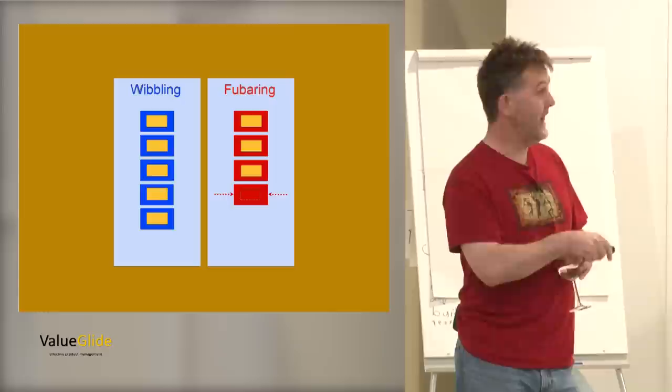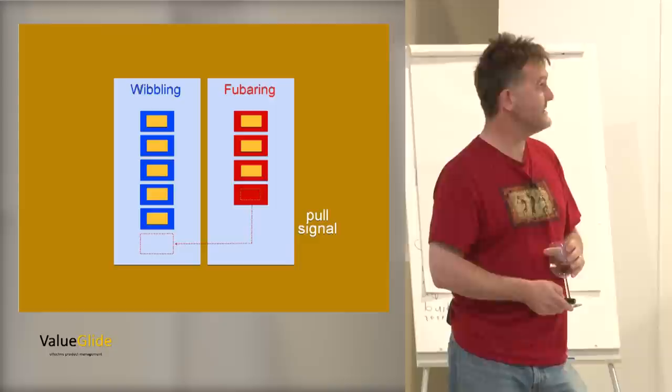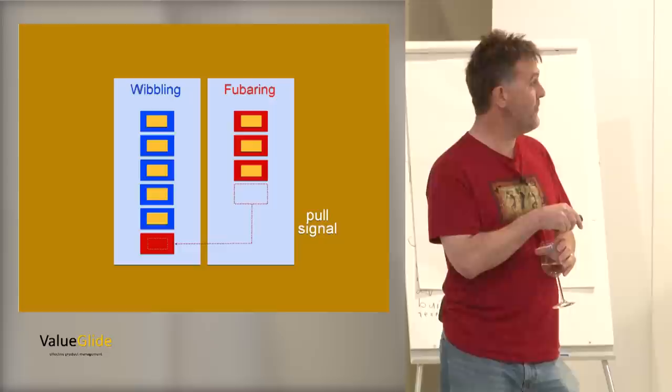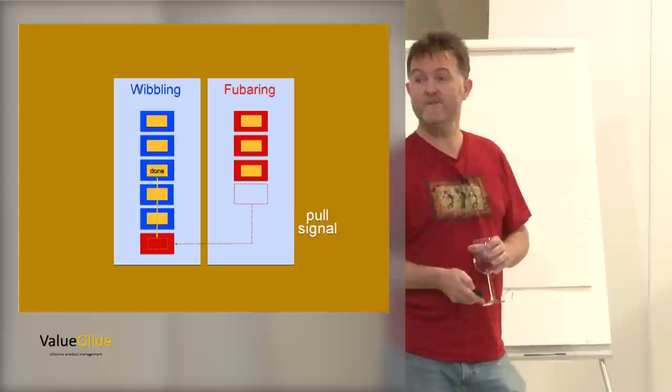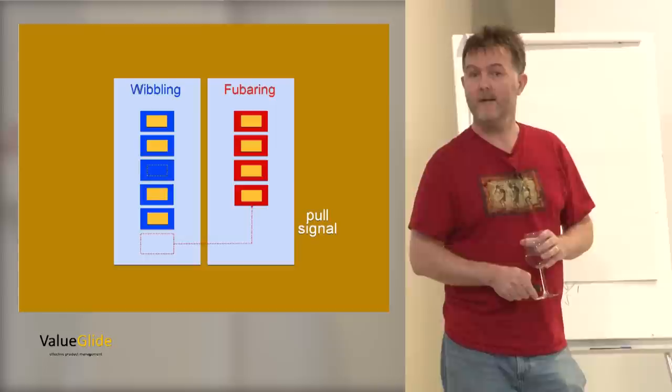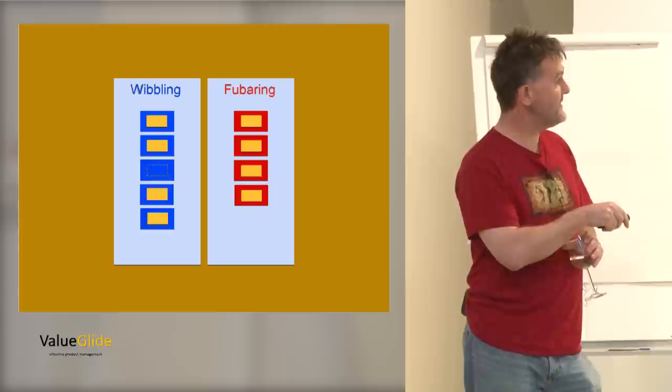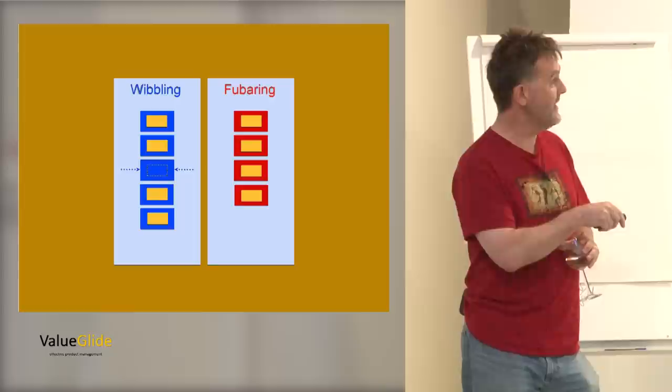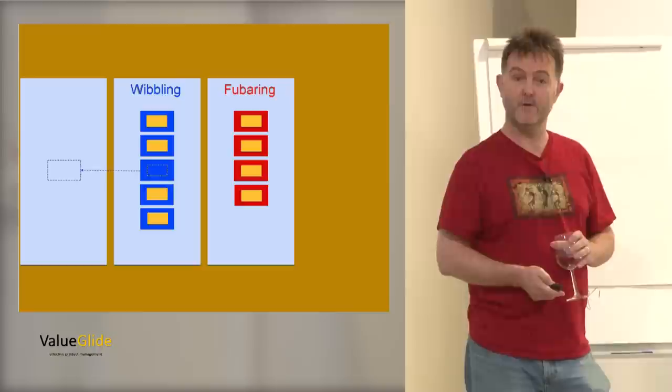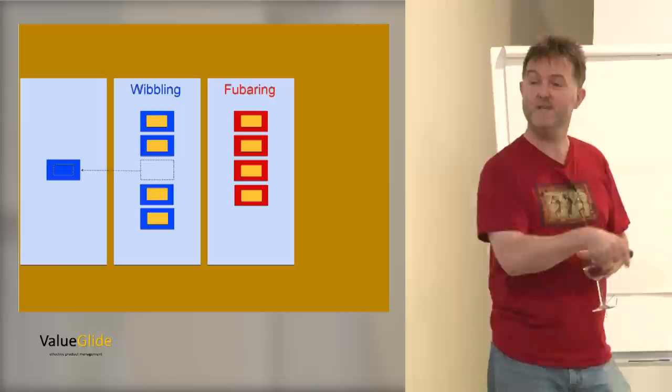As we said, the red column has a spare Kanban. So that's what we're focusing on. They can simply send that to the upstream column to indicate they would like some more work, please. And there it goes. At some point, some piece of work in the upstream process finishes. It's done. In which case, it can move into the empty Kanban, like that, and go back where it came from. That's pull. It's a visual system. It's completely obvious.